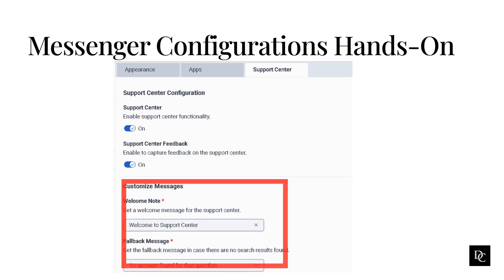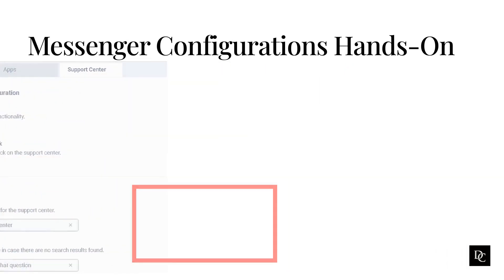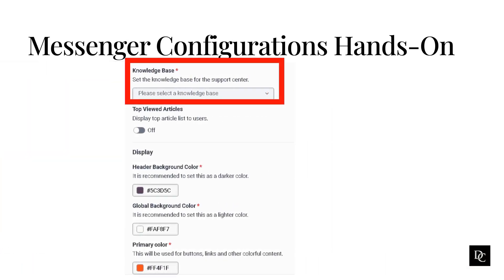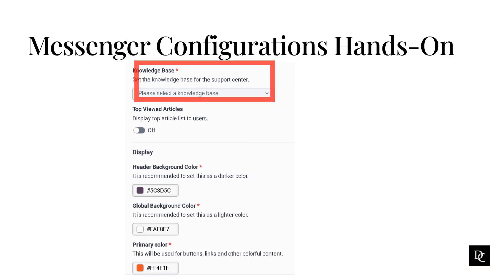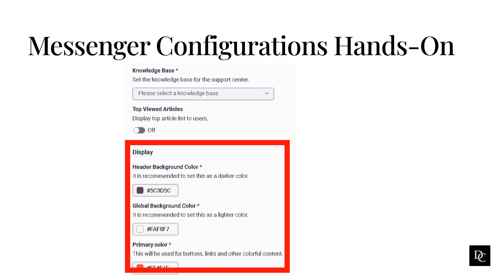A welcome and fallback message can also be sent. Under Knowledge Base, you can set the Knowledge Base for the Support Center and set the top-viewed articles to display. Under Display, you can set the header, global, and primary colors. After completion, click either Save New Version or Save Draft.